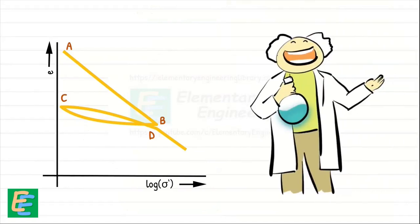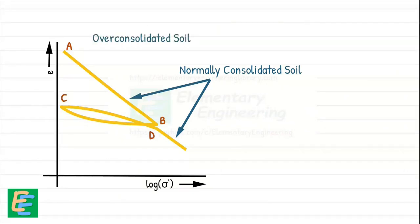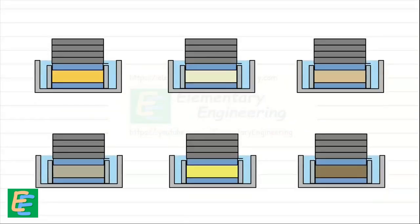An interesting thing we can observe from this experiment is that a plot of void ratio versus logarithm of effective stress is always a straight line for normally consolidated clay. However, for over consolidated clays, the plot almost always exhibits a convex curvature upward. This pattern has been confirmed by lots of experiments conducted on different soil samples.